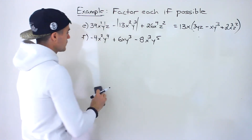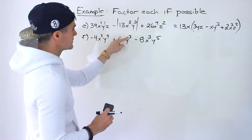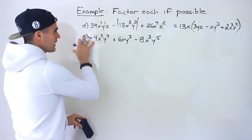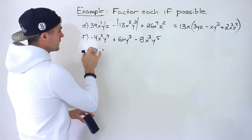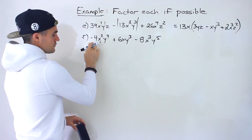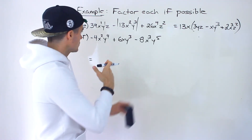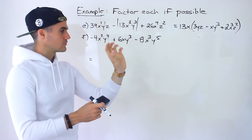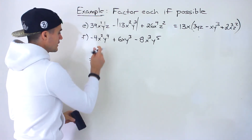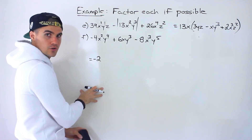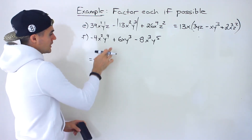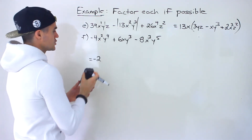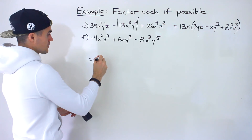Finally, part F: negative 4x²y⁴ plus 6xy³ minus 8x³y⁵. If there's a negative in front, you can take out a negative value. Looking at 4, 6, and 8 — the greatest common factor of those integers is 2. Because there's a negative leading term, I'm going to take out a negative 2. You could take out a positive 2 instead — I'll show that answer as well.